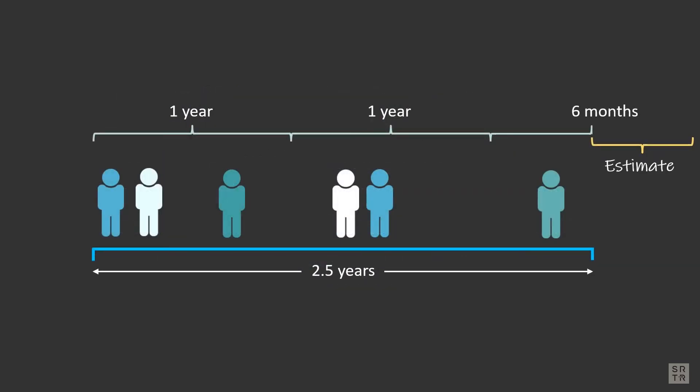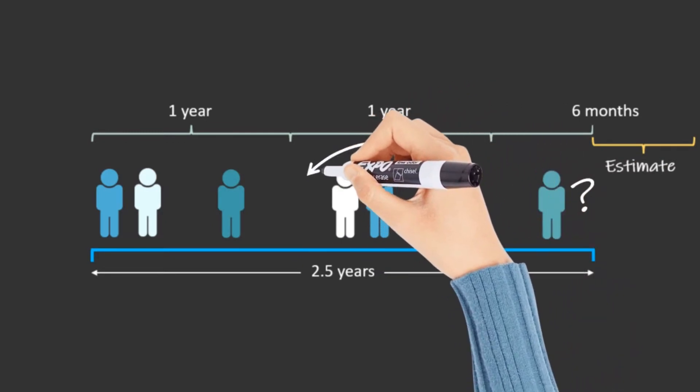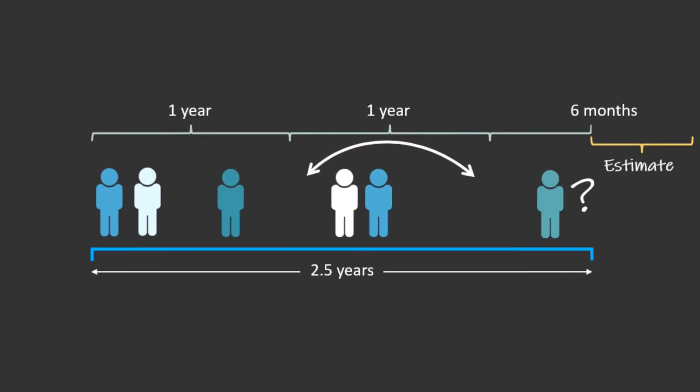With this equation, we estimate what would have happened in the last six months for the part of the cohort that only has six months of follow-up, based on what did happen in the part of the cohort that has a full year of follow-up. This is why we call it estimated probability of survival.